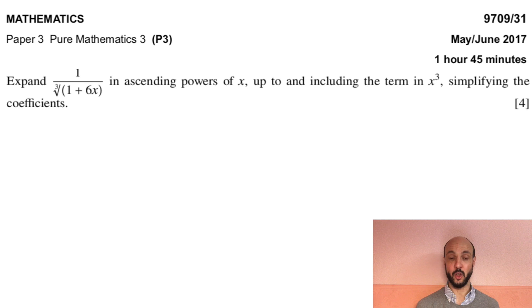We'll start by reading carefully through the question. Expand 1 over the cube root of 1 plus 6x in ascending powers of x up to and including the term in x cubed, simplifying the coefficients.